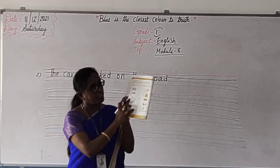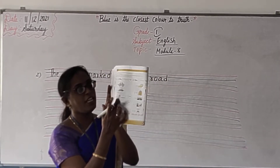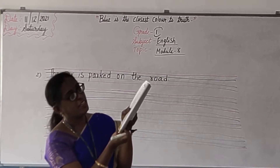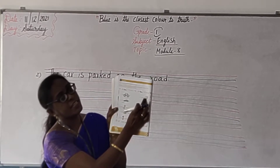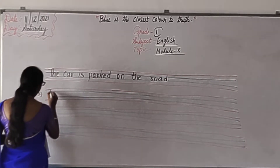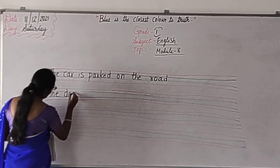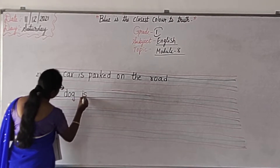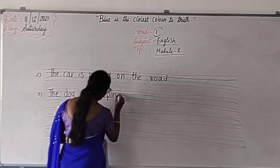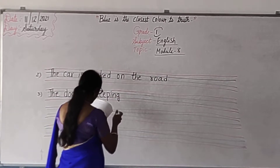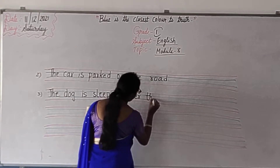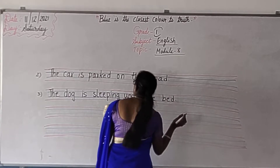Then the second picture — what is that? The dog. This is a dog, right? Yes. The dog is sleeping. Where is the dog sleeping, children? Under the bed. Write down: The dog is sleeping under the bed.